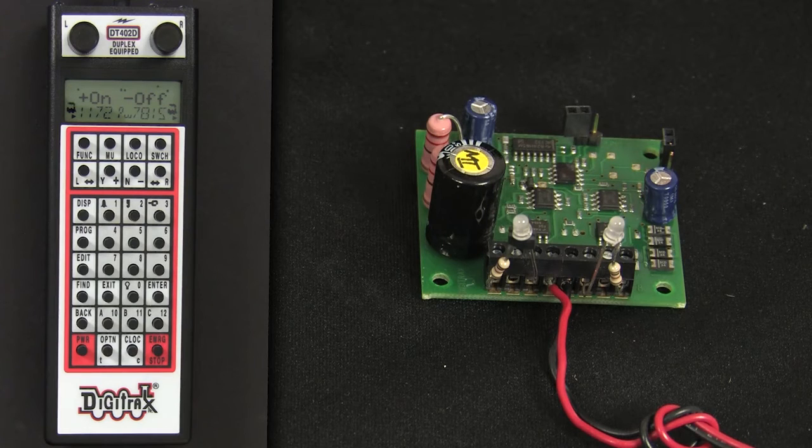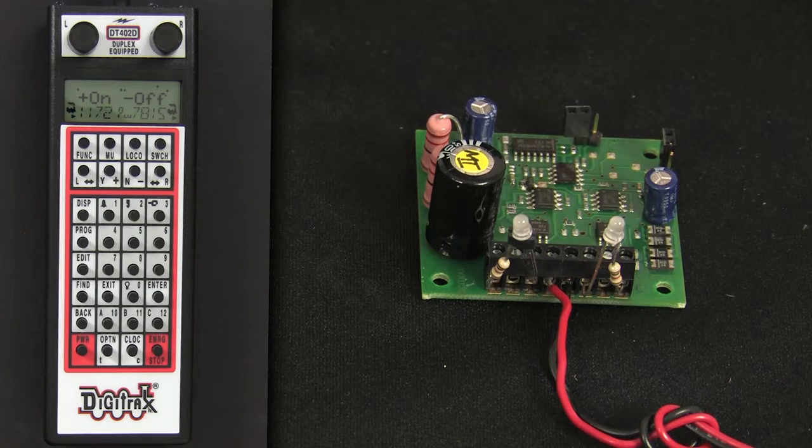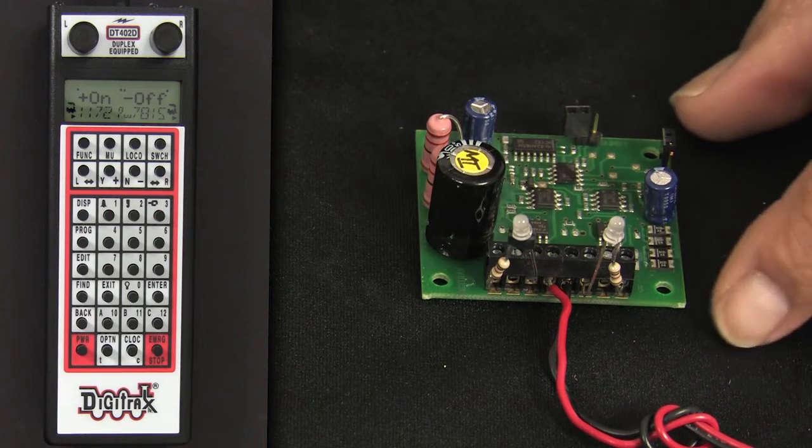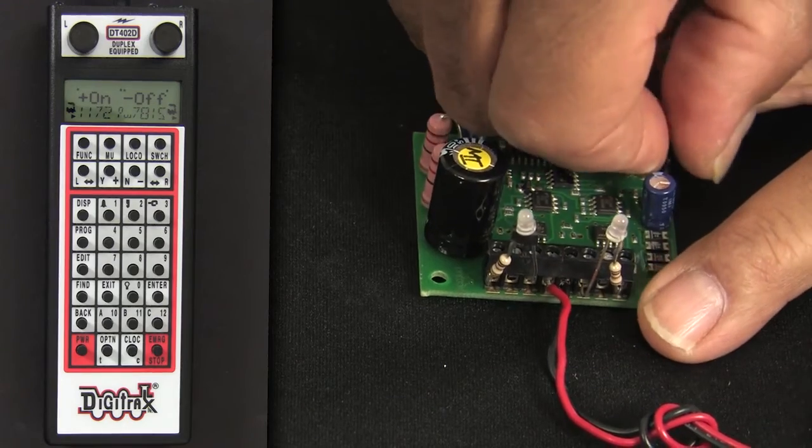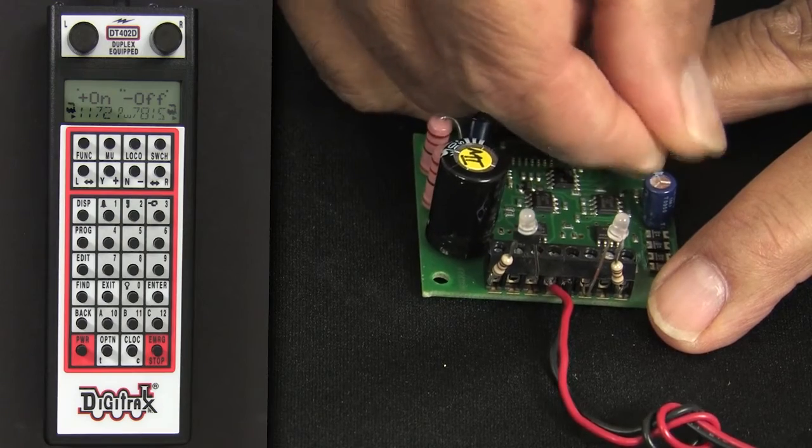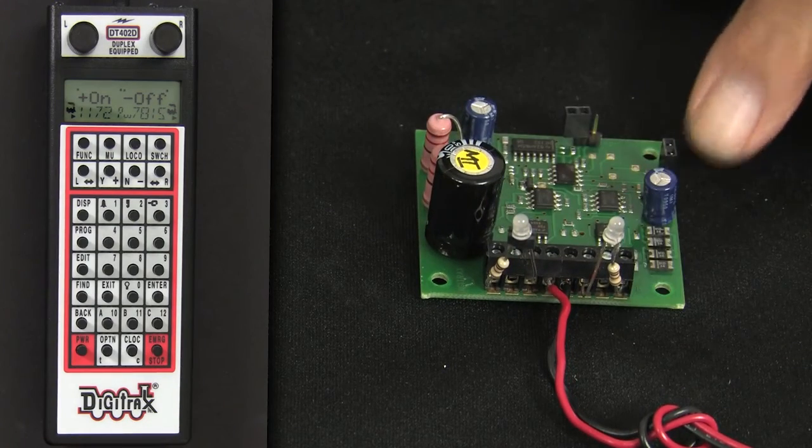In order to safely move the program jumper, we must make sure that track power is off. The programming jumper is moved from the open position, only one pin, to the closed position, where it actually jumps both pins on the program point.